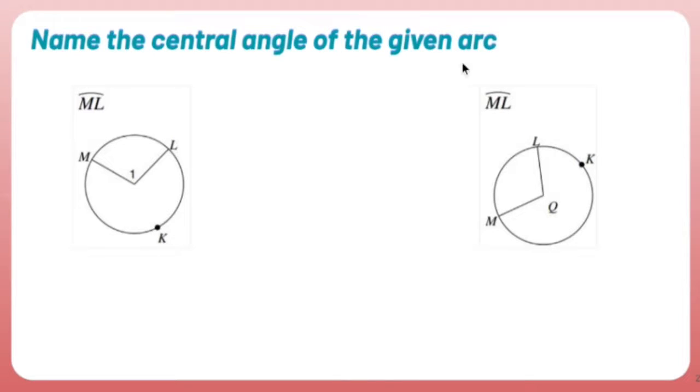Name the central angle of the given arc. A central angle is the angle that basically its vertex is the center of a circle. This area is called a sector, not that it matters.